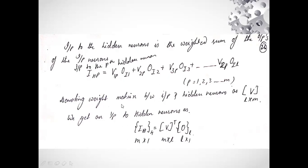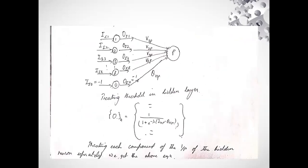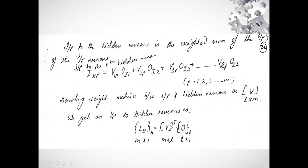In matrix notation, the input of the hidden layer IH equals V-transpose multiplied by the output of the input layer OI, where the matrix is of dimension L by L corresponding to the L number of nodes in the input layer. This is illustrated with a small diagram showing the pth neuron of the hidden layer receiving inputs II1 and OI1 through the connecting weight V.